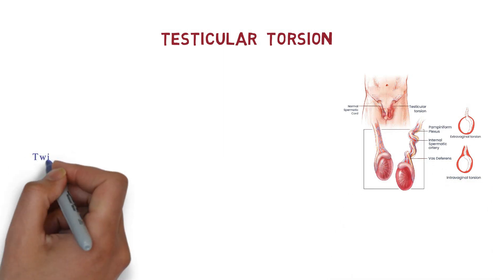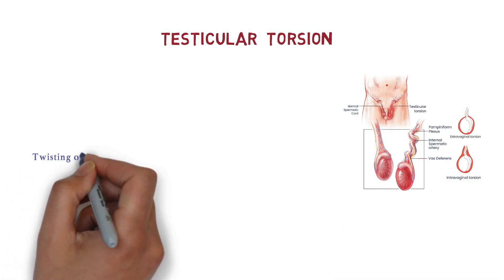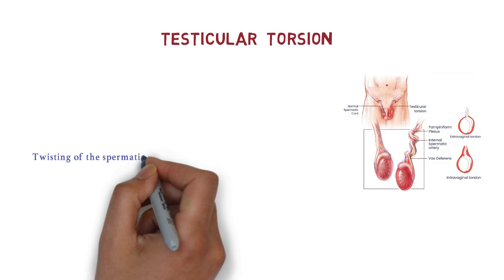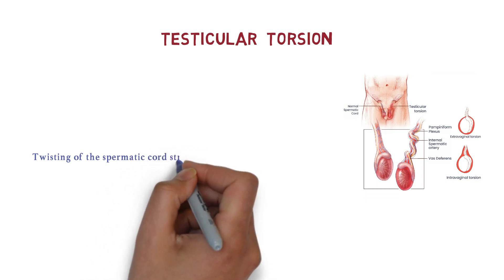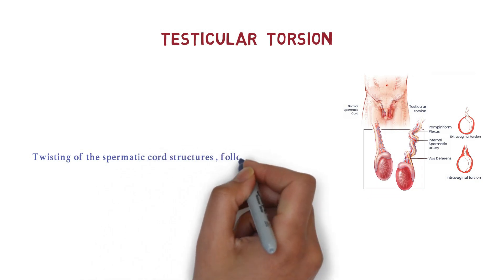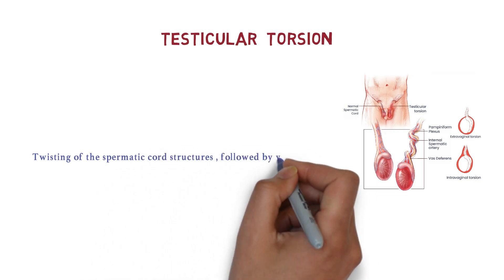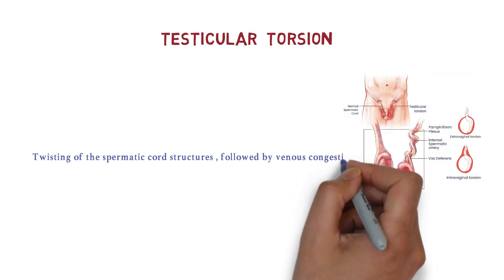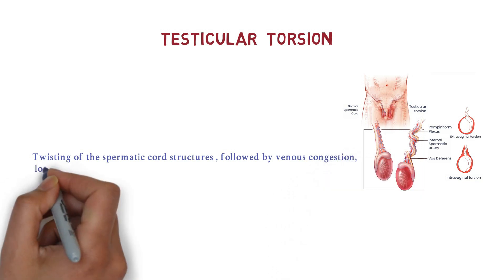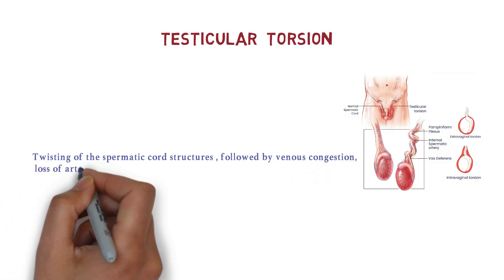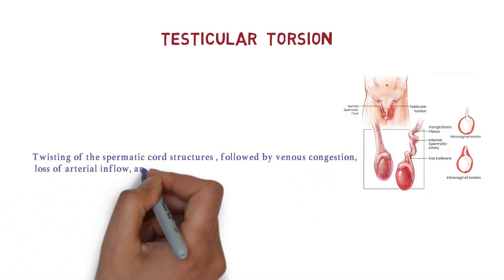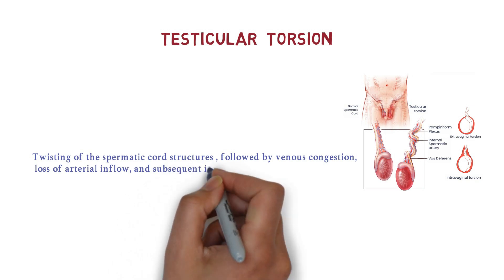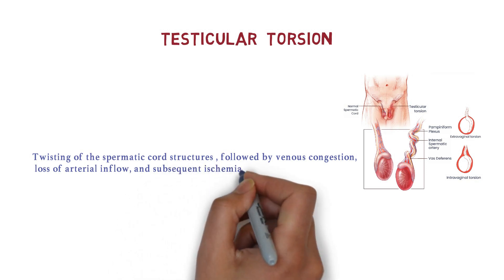What is testicular torsion? It is defined as twisting of the spermatic cord structure followed by venous congestion, loss of arterial inflow, and subsequent ischemia of the testis.